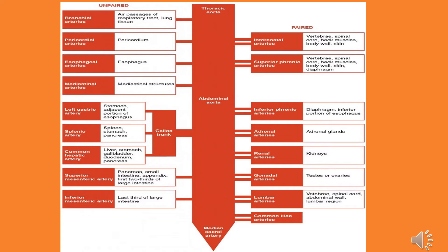The celiac artery branches include: the left gastric artery, which supplies the stomach and adjacent portion of the esophagus; the splenic artery supplying the spleen and pancreas; and the common hepatic artery supplying the liver, stomach, gallbladder, duodenum, and pancreas.